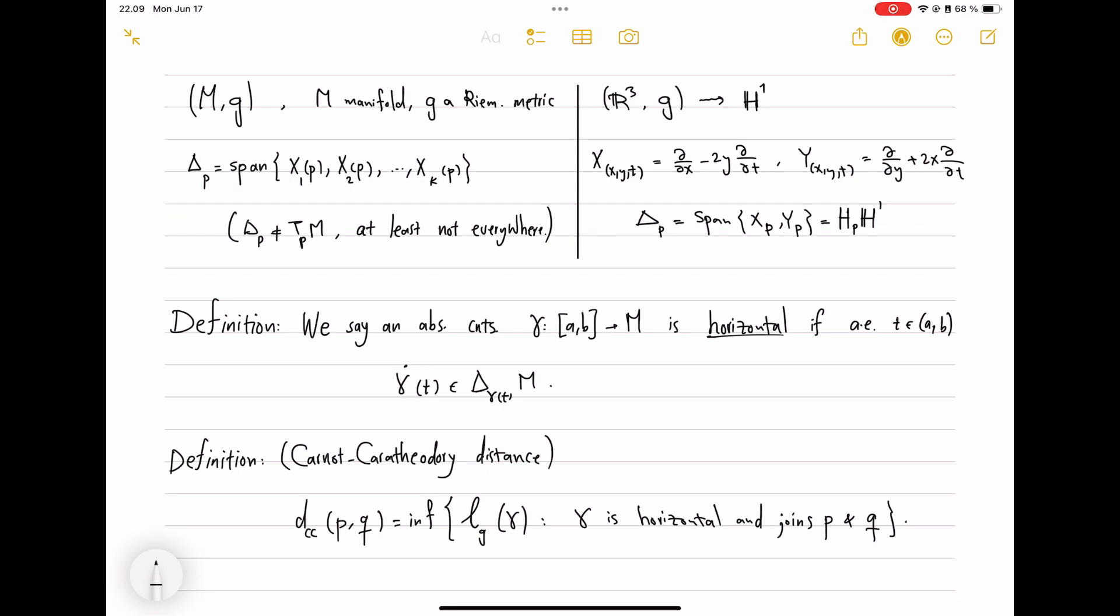In the case of Heisenberg group, we achieved this by looking at the projection of curves and the very detailed study of how length changed. And actually, we had this equality that the length of the horizontal curves were exactly equal to the length of their projections in the Euclidean geometry of the plane. And this very delicate equality was key to finding horizontal lifts of curves and using that to prove connectivity. But one might think this is just so tight, so close. It's almost like lucky that this happens.